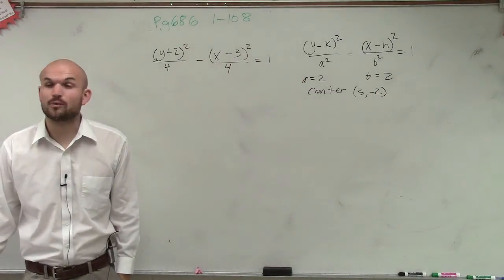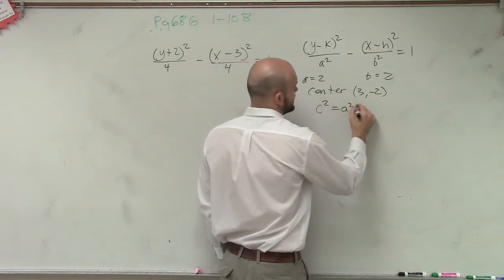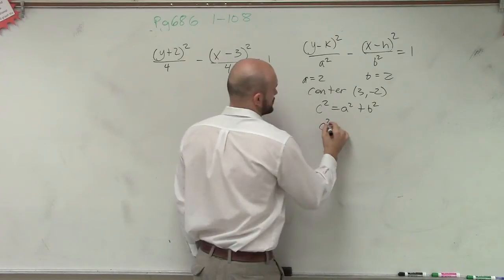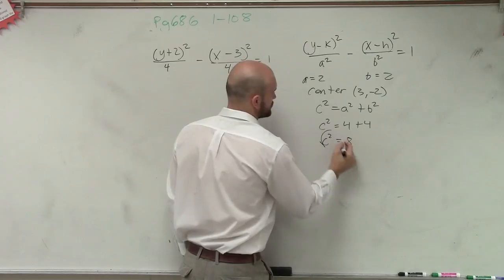Now we can also figure out what c squared is. Because remember, for hyperbola, c squared equals a squared plus b squared. So c squared equals 4 plus 4, c squared equals 8.